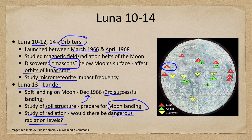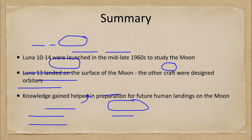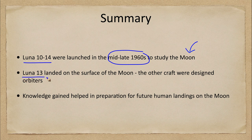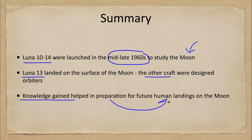As we continue to see, we're getting closer and closer to actually landing humans on the moon, and the Luna craft by the Soviet Union were some of the earlier studies of how this might work. In summary, Luna craft 10 through 14 were launched in the mid to late 1960s and were studying our moon. Luna 13 is the one that landed on the surface; the other craft were designed to orbit. The knowledge gained helped in preparation for future human landings on the moon just a few years later.